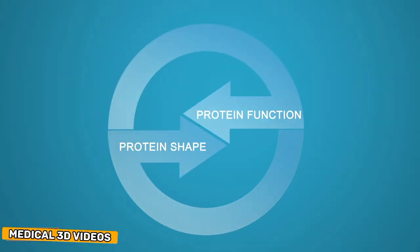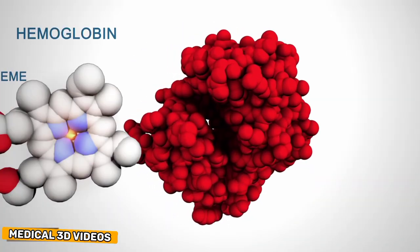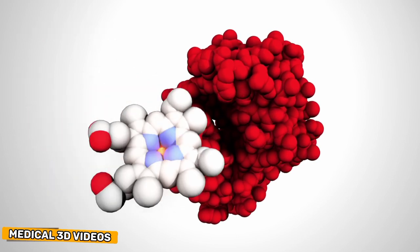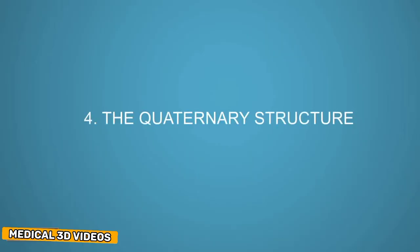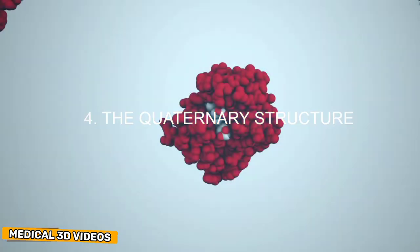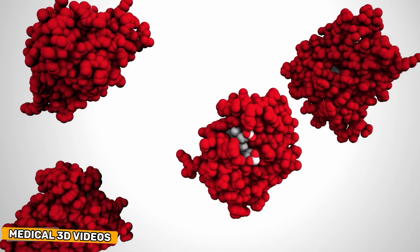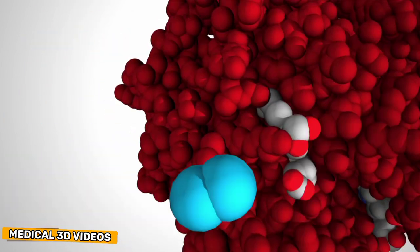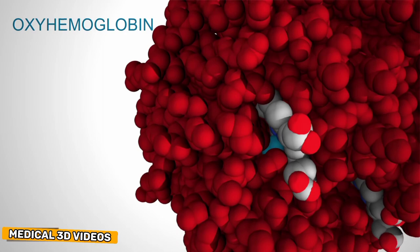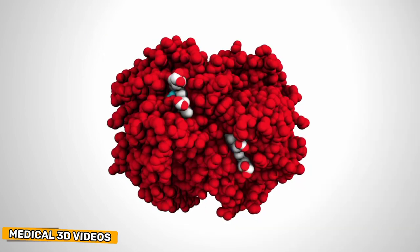The functions of many proteins rely upon their three-dimensional shapes. For example, hemoglobin forms a pocket to hold heme, a small molecule with an iron atom in the center that binds to oxygen. Quaternary structure: two or more polypeptide chains can come together to form one functional molecule with several subunits. The four subunits of hemoglobin cooperate so the complex can more easily pick up oxygen in the lungs and release it in the body.